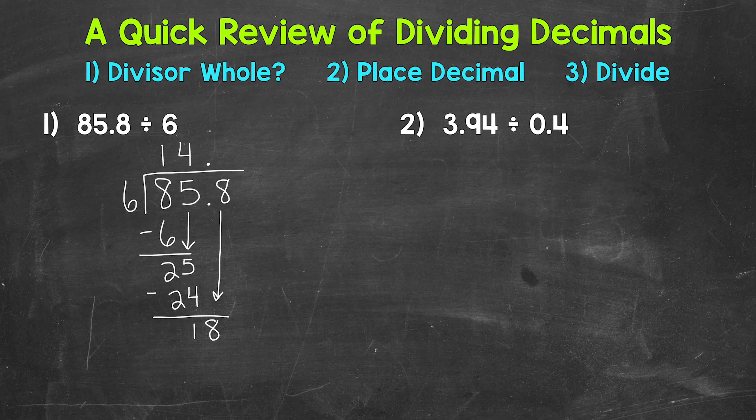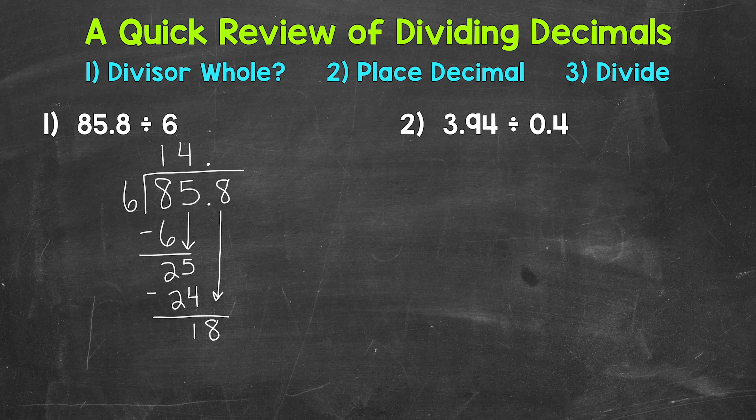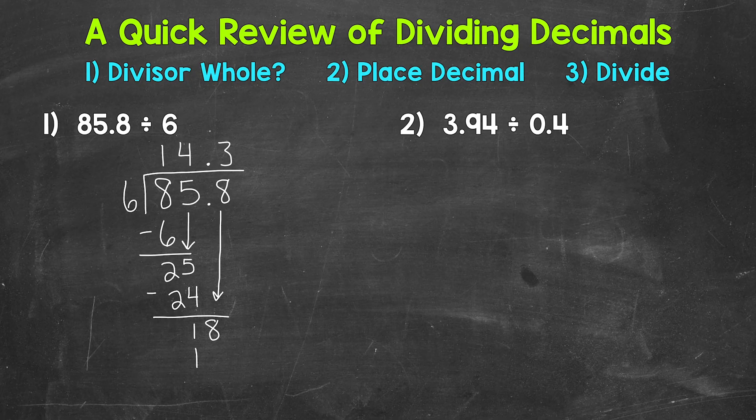So we repeat now. We go back to divide, 18 divided by 6. How many whole groups of 6 in 18? 3. Multiply, 3 times 6 is 18, subtract, we get a nice clean cut 0 there, and we are done.